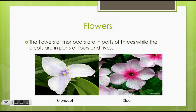Flowers: the flowers of monocots are in parts of three, while the dicots are in parts of fours and fives. As we see an example on the left of the monocot flower, it has three leaves. This can be in multiples, usually found in six or nine.